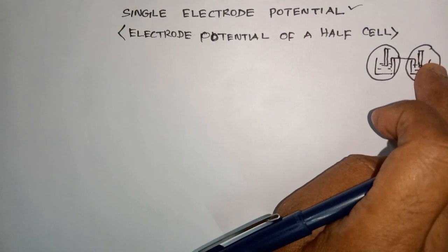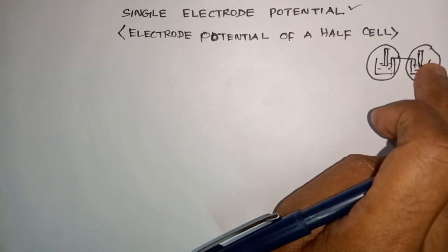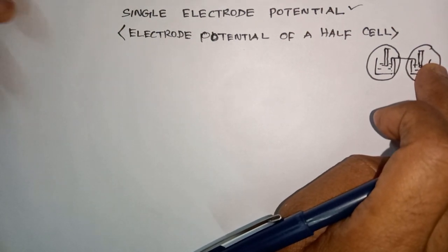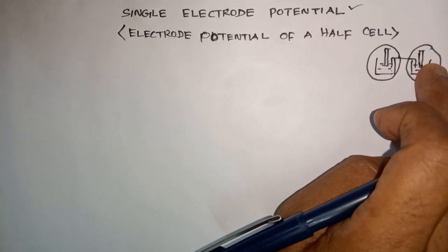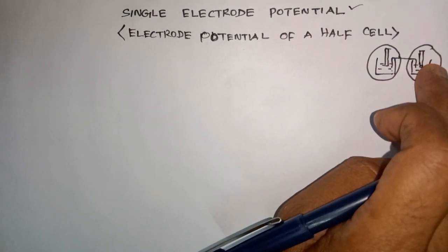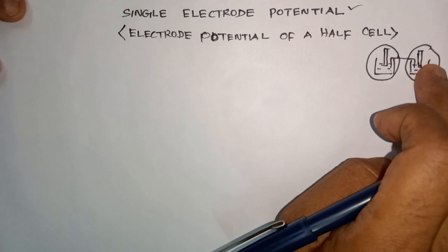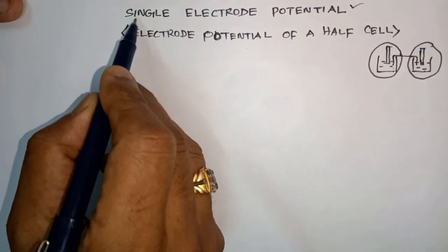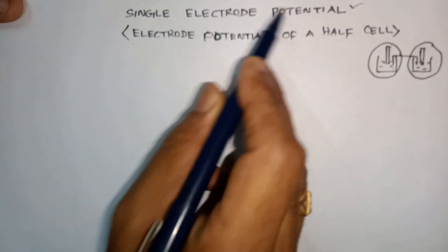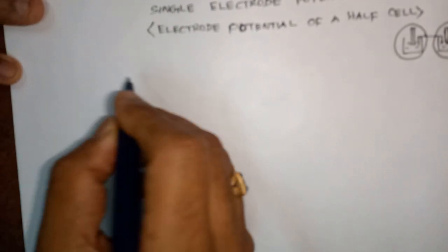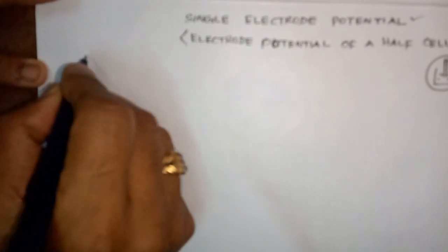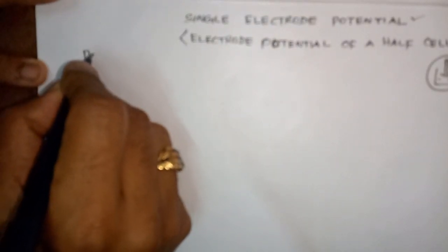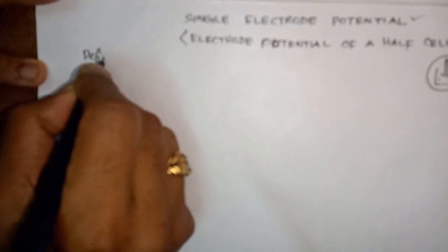Usually we use a reference cell called SHE — Standard Hydrogen Electrode — whose electrode potential value is 0. That we will see in the upcoming videos. Here I am talking about single electrode potential. So now, what is called single electrode potential? I will write the definition for single electrode potential.